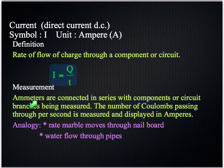Ammeters. They are the things that are used to measure current. They're connected always in series. With the components or the circuit branches being measured. The number of coulombs passing through per second is measured and displayed in amperes. So a coulomb per second is the same as an amp. In other words the unit of an amp is a coulomb per second. The analogy for current is the rate at which the marble moves through the nail board. That is what I'll show you in class. There will be a demonstration and you'll be able to understand that better and make a note. Another analogy would be the flow rate through pipes of water. However, the rate of flow of molecules of water through pipes would be the analogy with current.